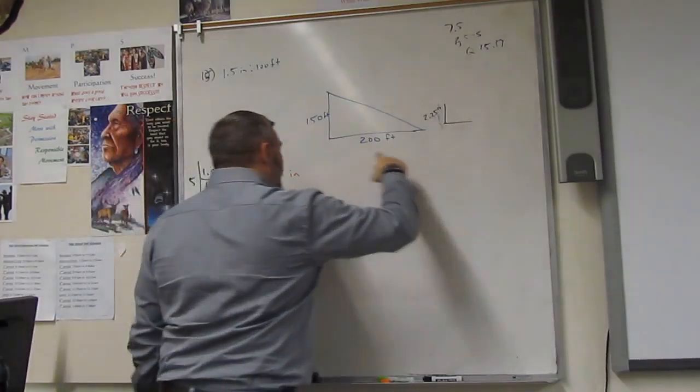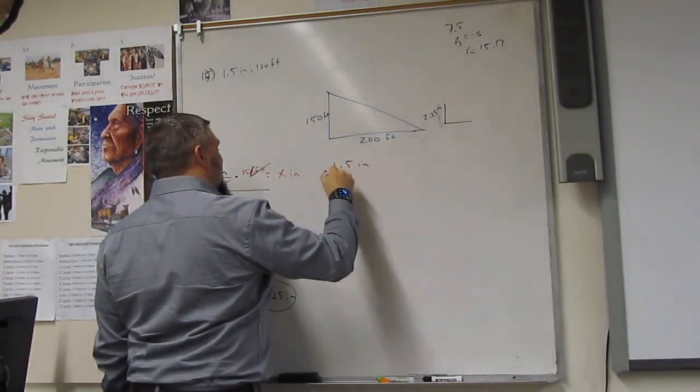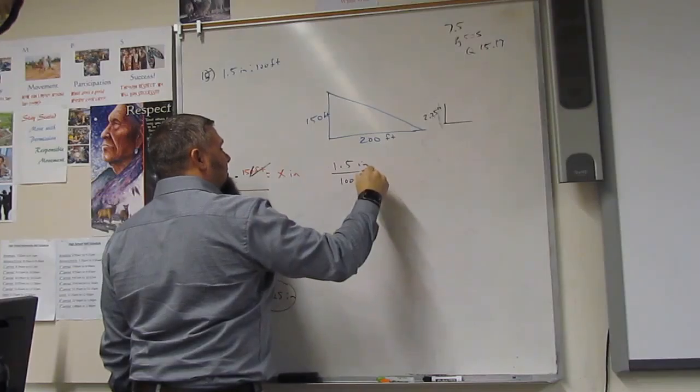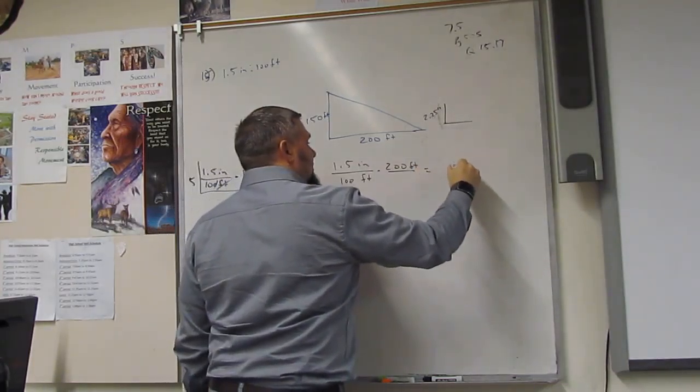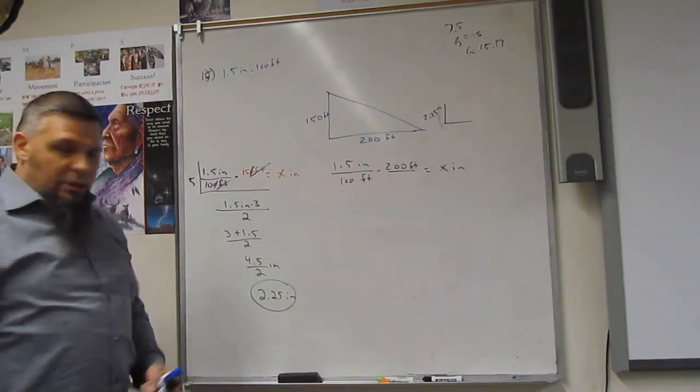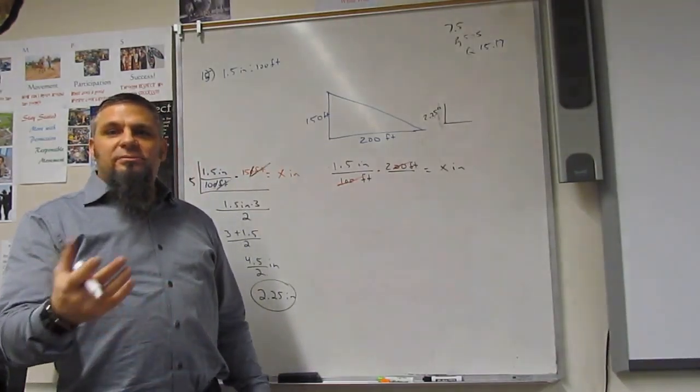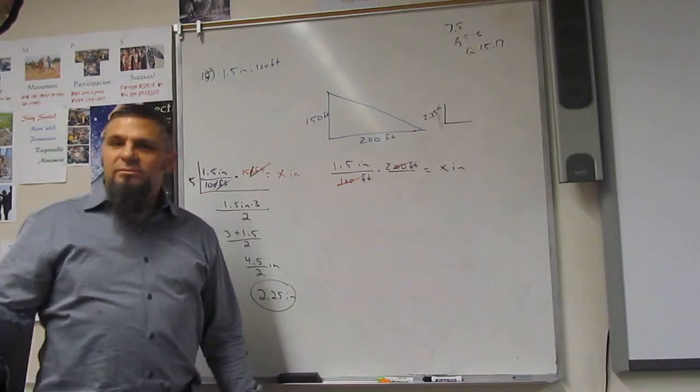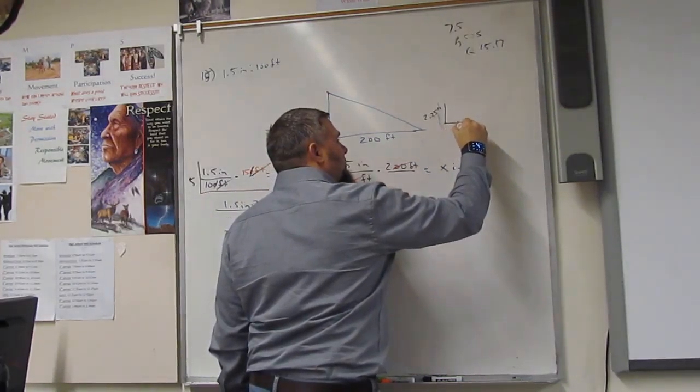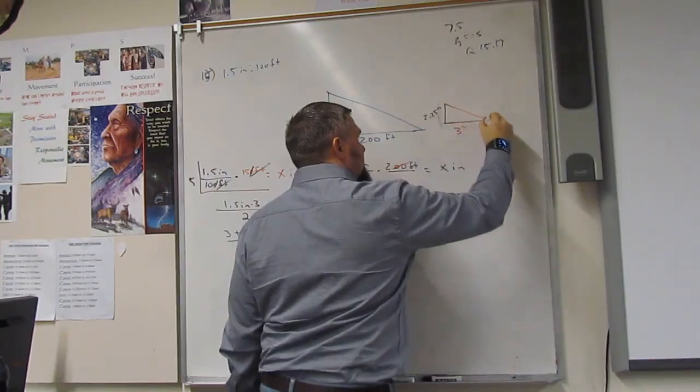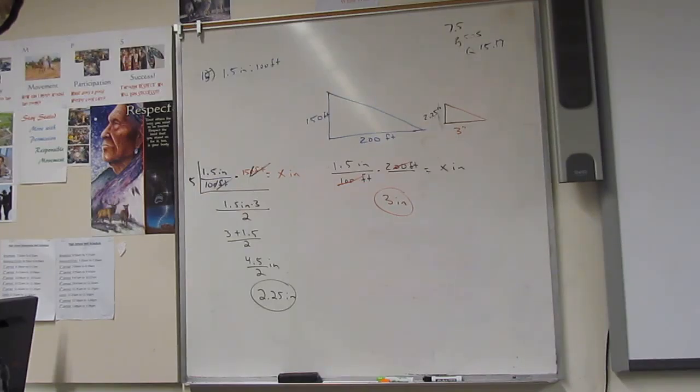Next, how long is the other side? I got to do the same thing. 1.5 inches over 100 feet times 200 feet over nothing equals some x inches. So, how many times does that 100 go into 200? Twice. It's 2, 1 and a half. So, if you got $1.50 twice, three bucks. So, three inches. That means this side is going to be three inches long. And you have your triangle. Pretty simple.